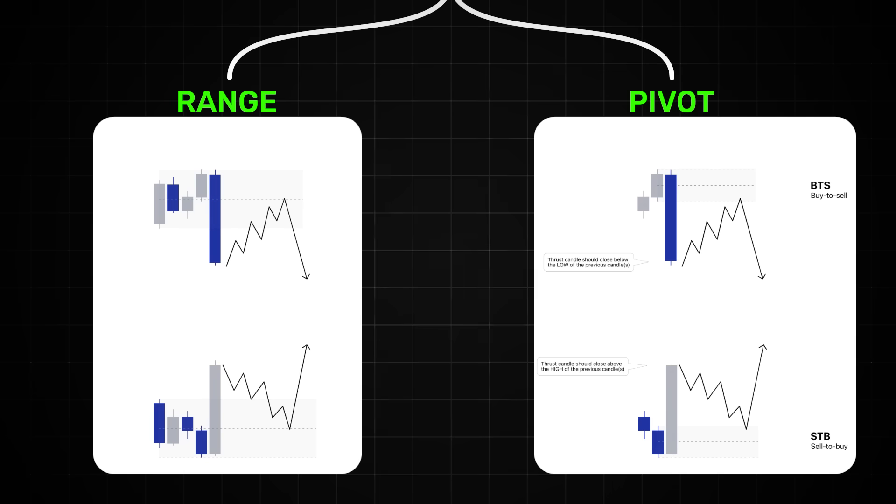For a supply zone it's usually a bullish candle where the next thrust candle closes below its low. This can be called a buy-to-sell zone. For demand it's usually a bearish candle where the next thrust candle closes above its high and this can be called a sell-to-buy zone. Now I'm not personally that strict on the sell-to-buy or buy-to-sell method because sometimes I will draw a demand zone on a bullish candle that's then engulfed by another bullish candle and vice versa. But for a demand zone that thrust candle must close above the previous candle's high and for a supply zone the thrust candle must close below the previous candle's low for it to be a valid supply zone.